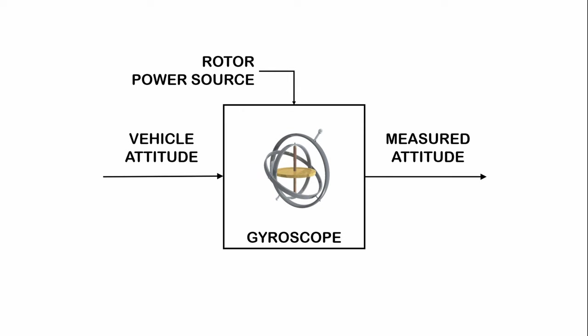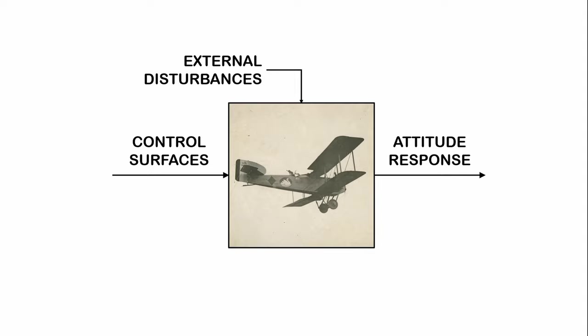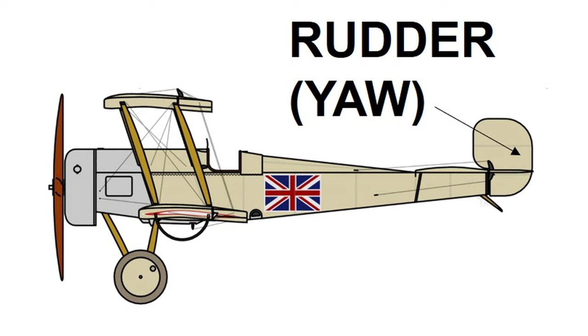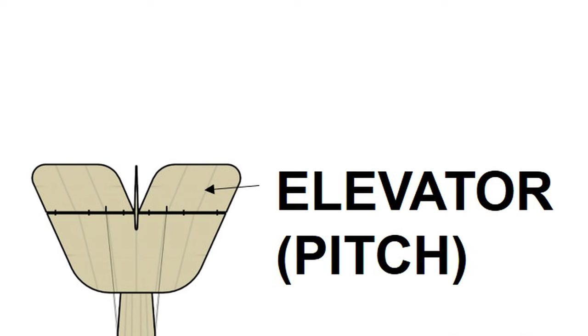We can represent the gyroscope as a process that relates the attitude of the vehicle to the gyroscope response. We can also represent the aircraft as a process where control surfaces and external disturbances from the atmosphere determine its attitude. The control surfaces are the rudder, a vertical surface that controls yaw, the elevator, two horizontal surfaces that control pitch, and the aileron, two horizontal surfaces that deflect opposite to control roll.